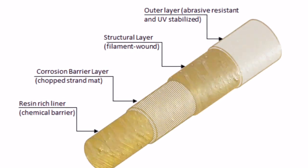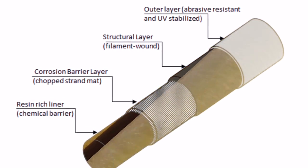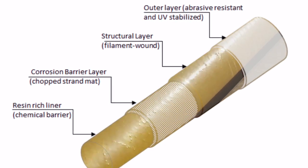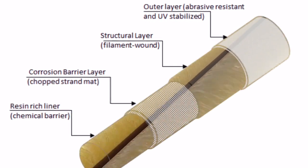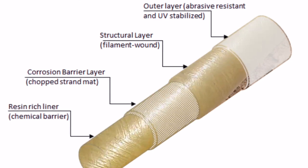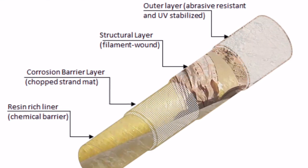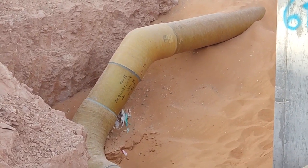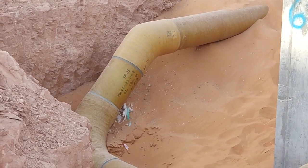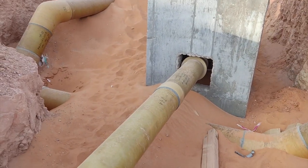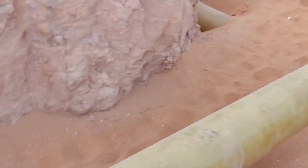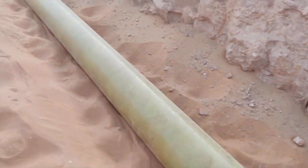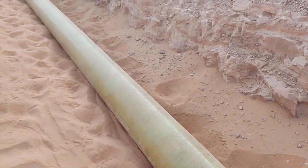Immediately outside the carrier layer is the corrosion barrier layer made of chopped strand mat. The third layer is the structural layer, which holds the form of the pipe and is filament wound. The outer layer protects the pipe from outer abrasion, and it has chemical additives to protect the non-metallic pipe from ultraviolet rays coming from the sun.